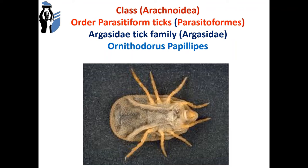Representatives of order Parasitiformes, family Ixodidae, are common in all countries. Many species of these ticks are vectors of pathogens of human diseases, for example: tick-borne encephalitis, typhus, Q-fever, tularemia, piroplasmosis, brucellosis, etc. But they are not vectors only — they are also reservoirs of many viruses and bacteria, which preserve these pathogens in their bodies for many years and support the natural foci of diseases.